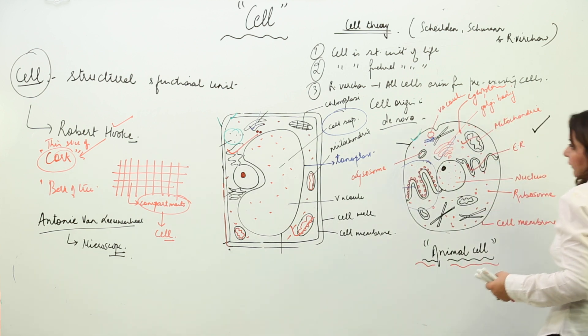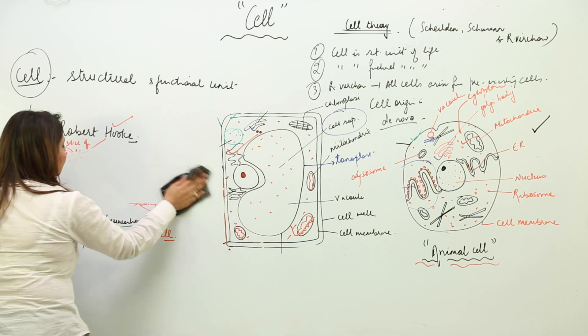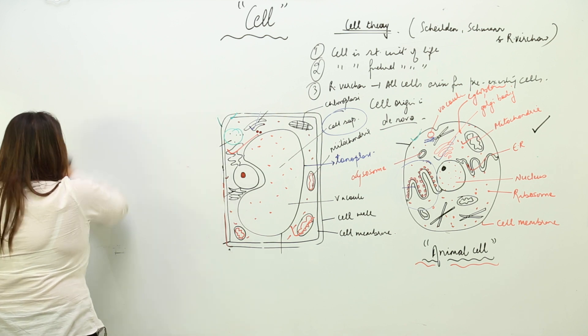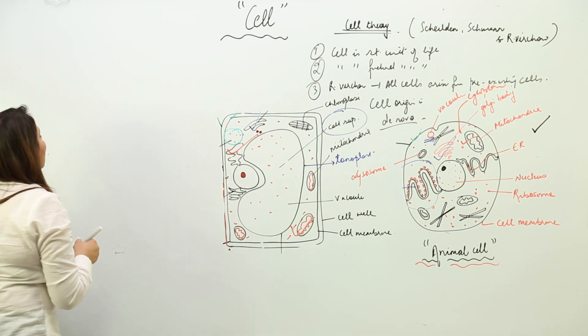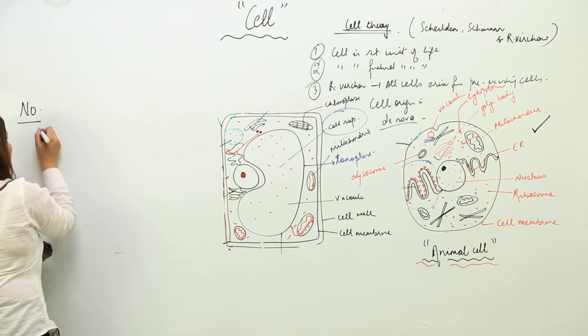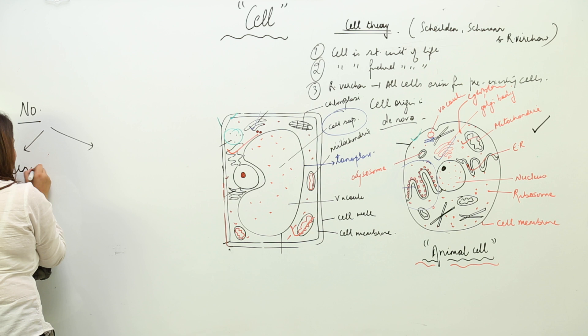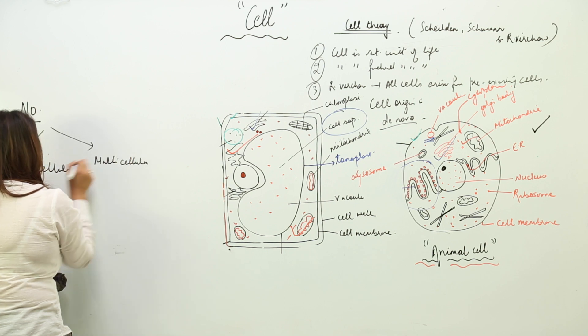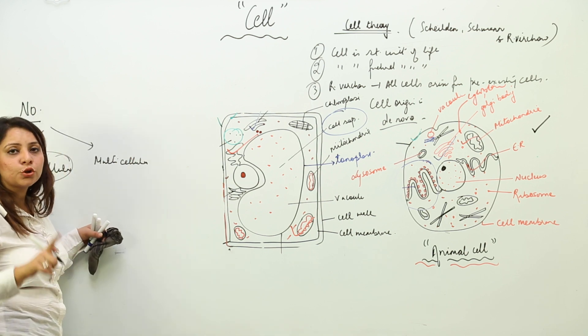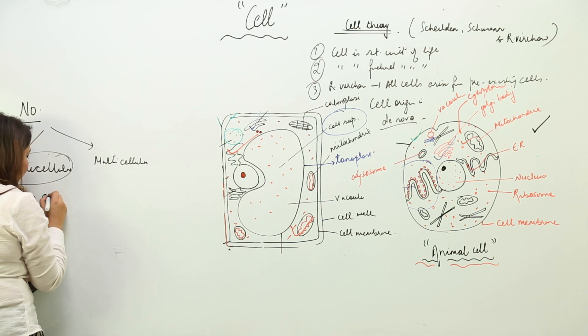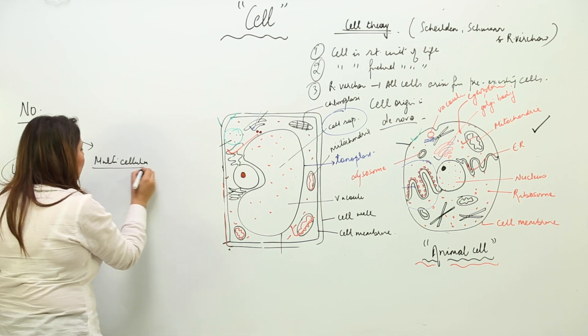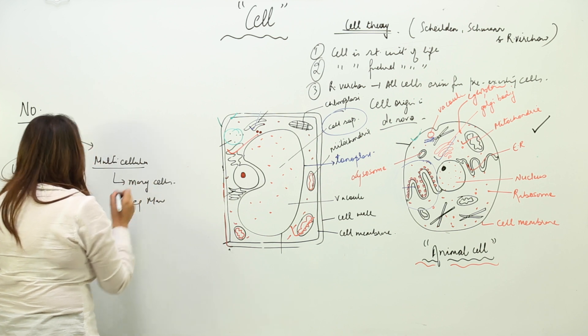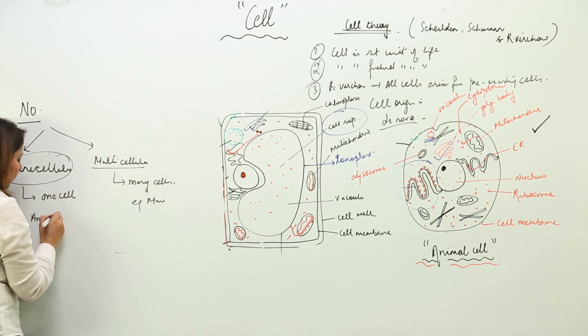Coming on to organisms composed of one cell or two cells, we see a variety of shape, number, and functions of the cell. Depending upon the number, organisms are mostly classified as unicellular and multicellular. Unicellular are those whose body consists of only one cell. Multicellular are those whose body is made up of many cells, like us, man.